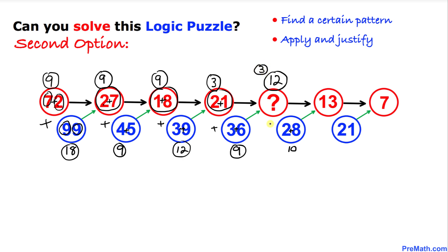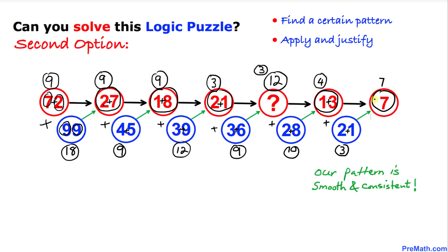Let's add these numbers. 3 plus 10 is going to give us indeed 13. And now let's add 1 plus 3, which is going to give us 4, and 2 plus 1 is going to be 3. Let's add these numbers: 4 plus 3 indeed gives us 7. Same number. As you can see, this time we did not see any conflict. That means our pattern is smooth and consistent. So that means our answer 12 is indeed a valid answer.